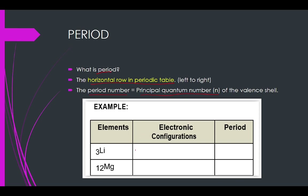For example, if we write the electronic configuration for lithium: 1s2, 2s1. If you still remember Aufbau, Hund's, and Pauli exclusion rule — 2 plus 1 is equal to 3. So this is the electronic configuration for lithium, which has 3 protons.